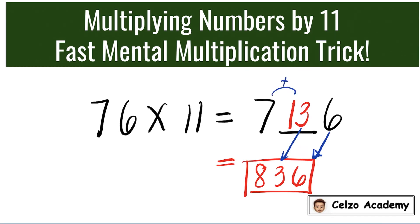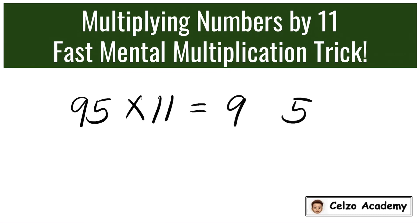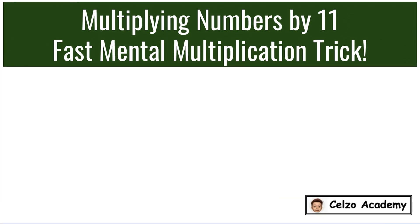Next problem: 95 times 11. The first step is to write 9 and 5 with a space between them. Adding 9 and 5 gives us 14. To get the final answer, we copy the 5, copy the 4, and add 9 and 1, which is 10. So the answer is 1,045.